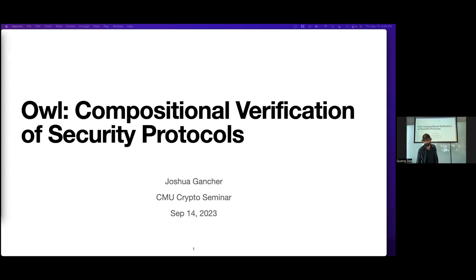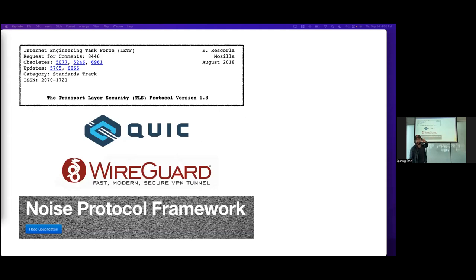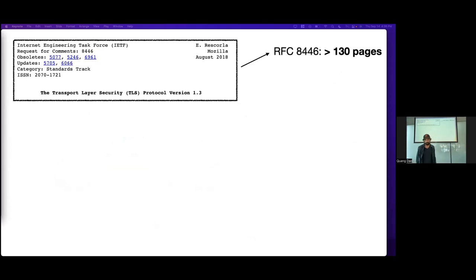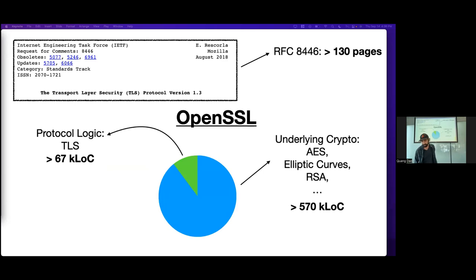By security protocols I mean things like TLS, its modern version QUIC, WireGuard, or more generally protocols in the Noise framework — which are basically critical to our everyday digital lives. They form the foundation of how we do things online: identification, banking, e-commerce, and storing private information on the cloud. Because of their general-purpose use, these protocols are massive. The defining RFC for TLS alone is over 130 pages of English text, and one of the most popular implementations runs at over 570,000 lines of code for the underlying crypto.